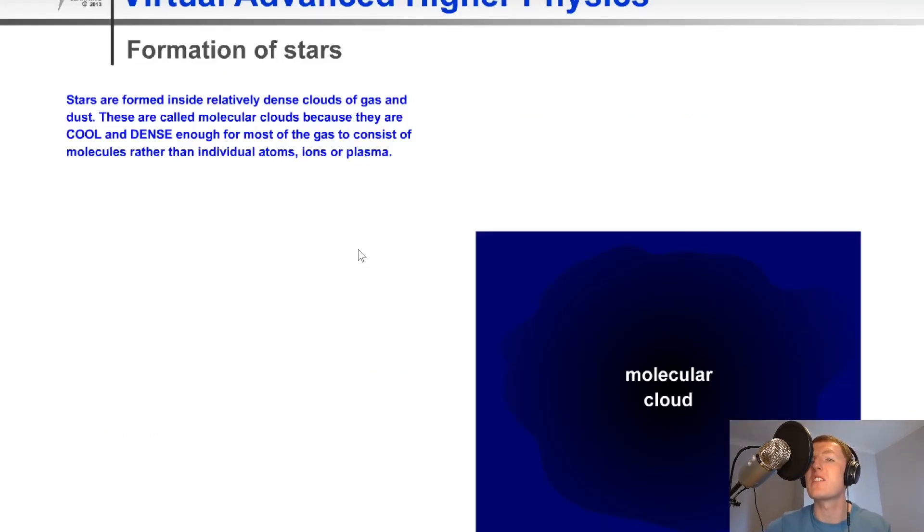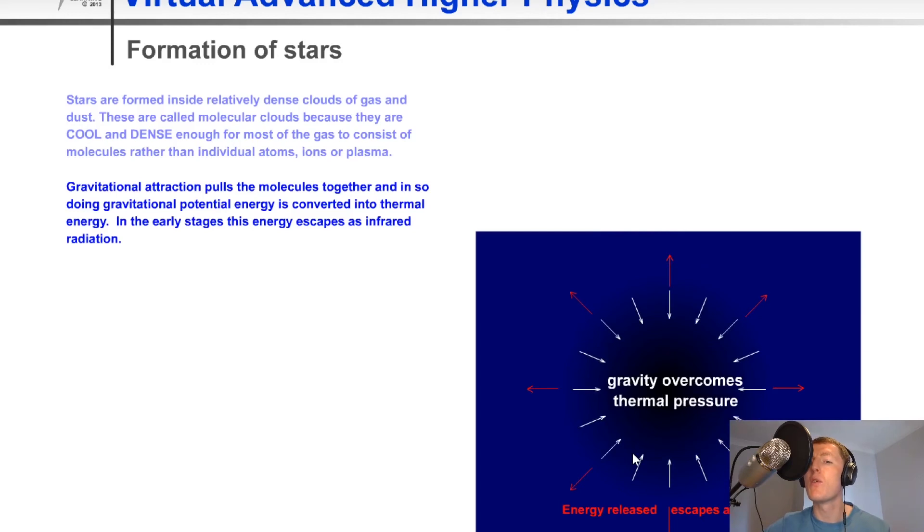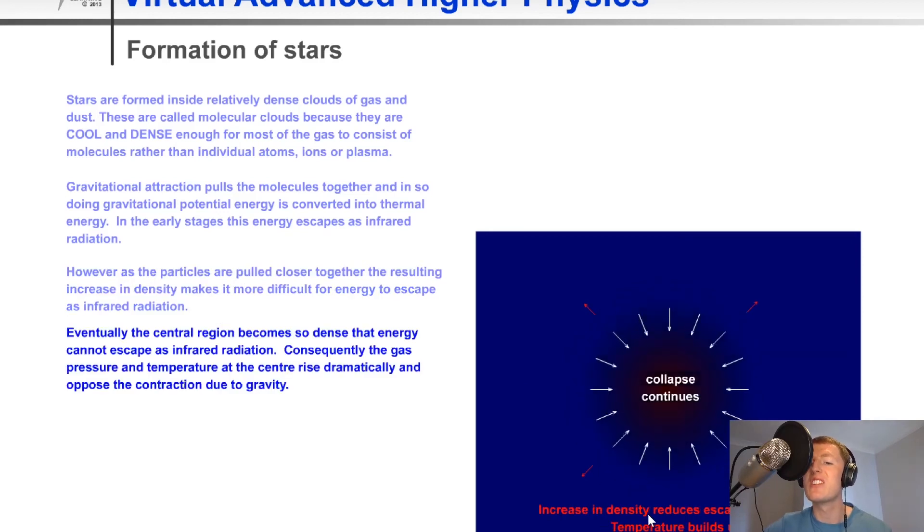Just to summarize how a star is actually formed and becomes a main sequence star, we're going to look at this animation. So we start off with the molecular cloud, and then gravity overcomes thermal pressure, causing it to contract. Eventually the two forces become balanced, so the thermal pressure outwards balances the gravitational force inwards. The energy released escapes as infrared, i.e. heat radiation. Then this increase in density reduces the escape of infrared and temperature builds up. The temperature is not yet high enough for nuclear fusion to occur, and we end up with something called a protostar.